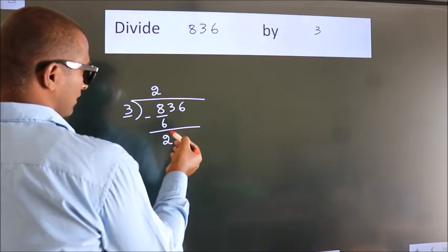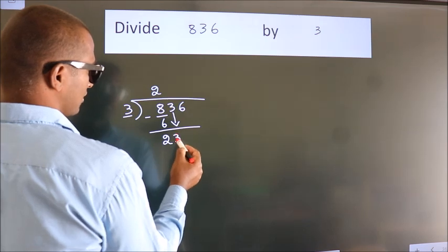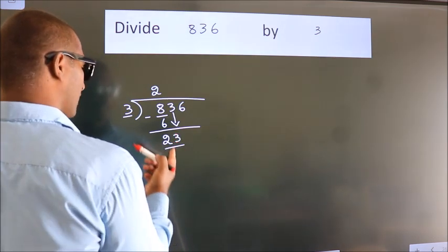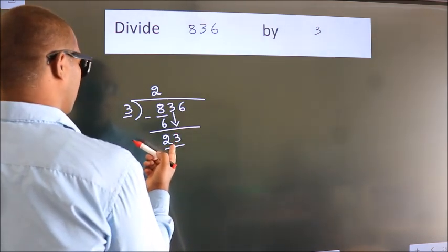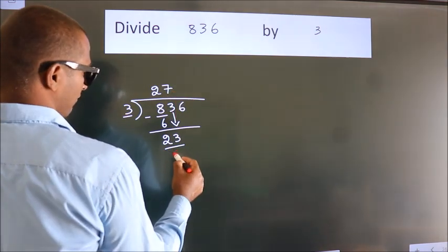After this, bring down the beside number. So 3 down. So 23. A number close to 23 in the 3 table is 3 times 7 equals 21.